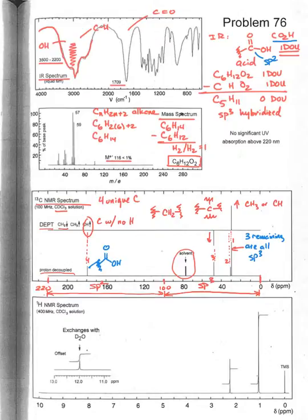One thing I want to connect back with is up here, we have to account for five carbons. But there's only three remaining. So that tells us there is symmetry, meaning that some of the remaining carbons have to be equivalent.